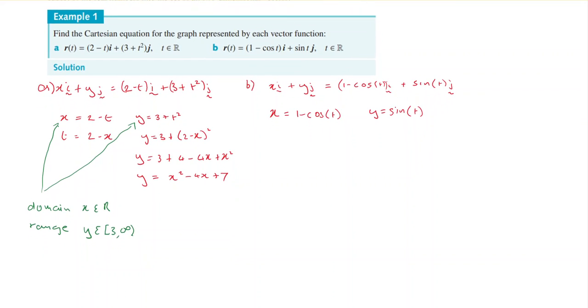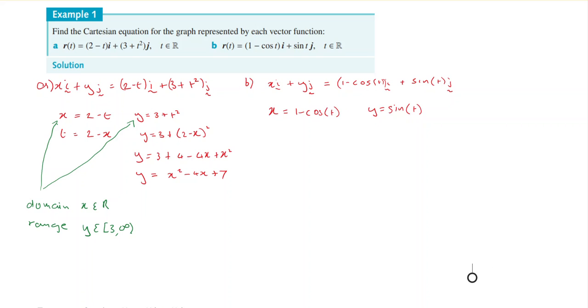So getting the cos squared by itself. Getting the cos t by itself. Cos t equals 1 minus x.